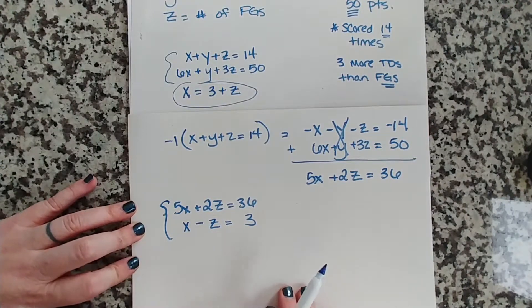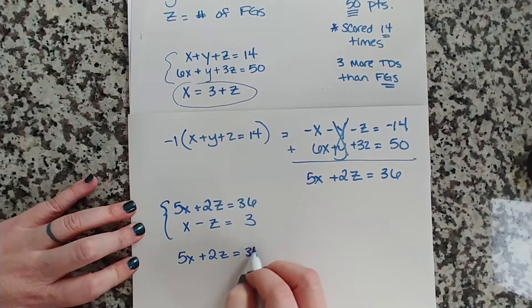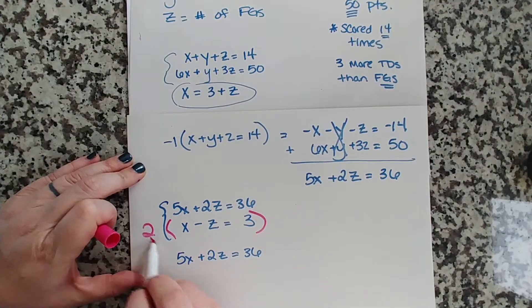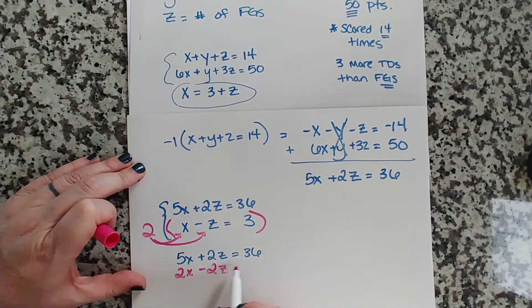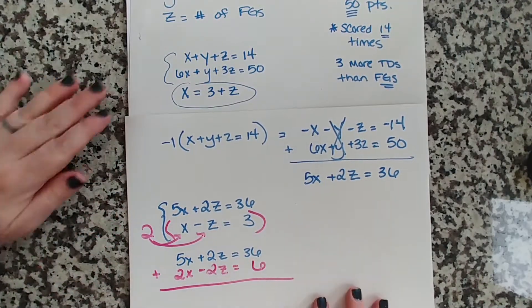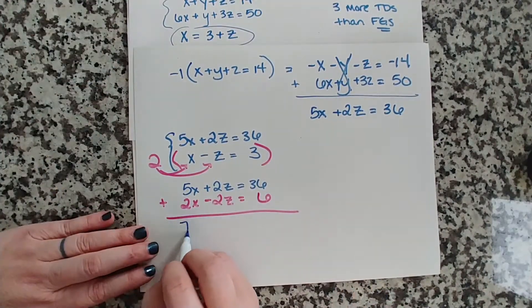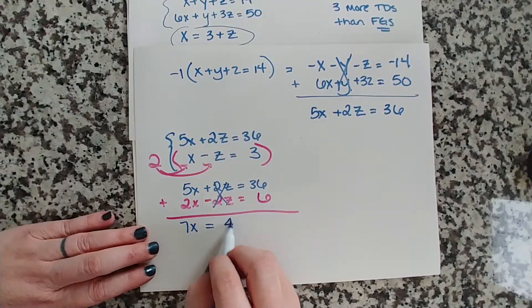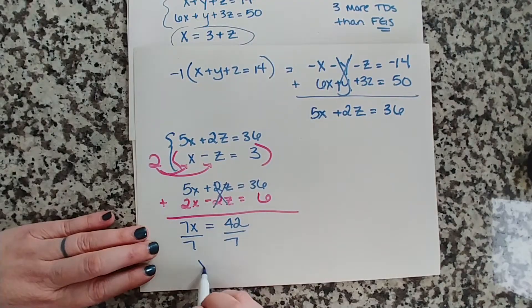So let's do that. We're going to take the second equation and multiply it by 2. So we have 5X plus 2Z equals 36. And this equation is getting multiplied by 2. So 2 times X is 2X, 2 times negative Z is negative 2Z, and 2 times 3 is 6. And we are going to combine these two equations. We're going to combine those two equations. 5X plus 2X is 7X. 2Z plus negative 2Z gives us nothing, which we were hoping we would get. And 36 plus 6 is 42. Works out very nicely because 42 is divisible by 7. Divide by 7, divide by 7, X equals 6.